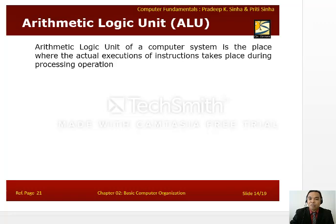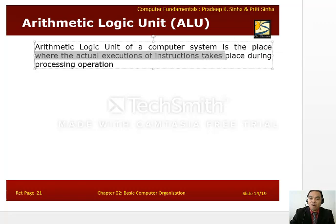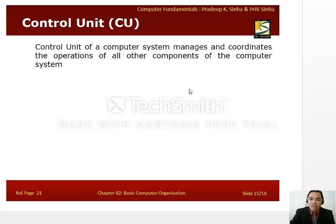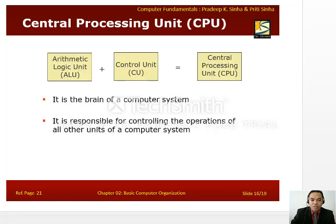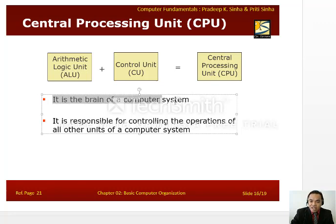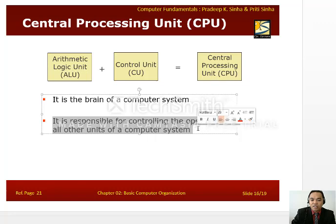The arithmetic logic unit is the place in a computer system where the actual execution of instructions takes place during the processing of data. Another part of the central processing unit is the control unit, whose job is to manage and coordinate the operations of all other components of the computer system. Together, the arithmetic logic unit and control unit compose the central processing unit. The CPU is the brain of the computer system and is responsible for controlling the operations of all other units.